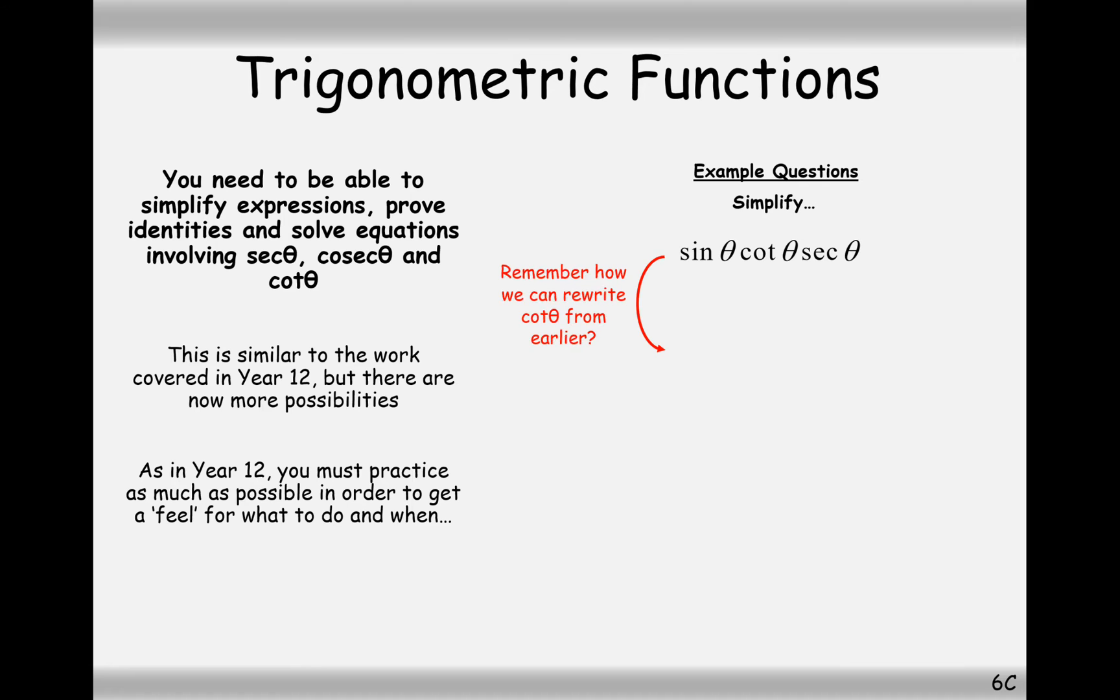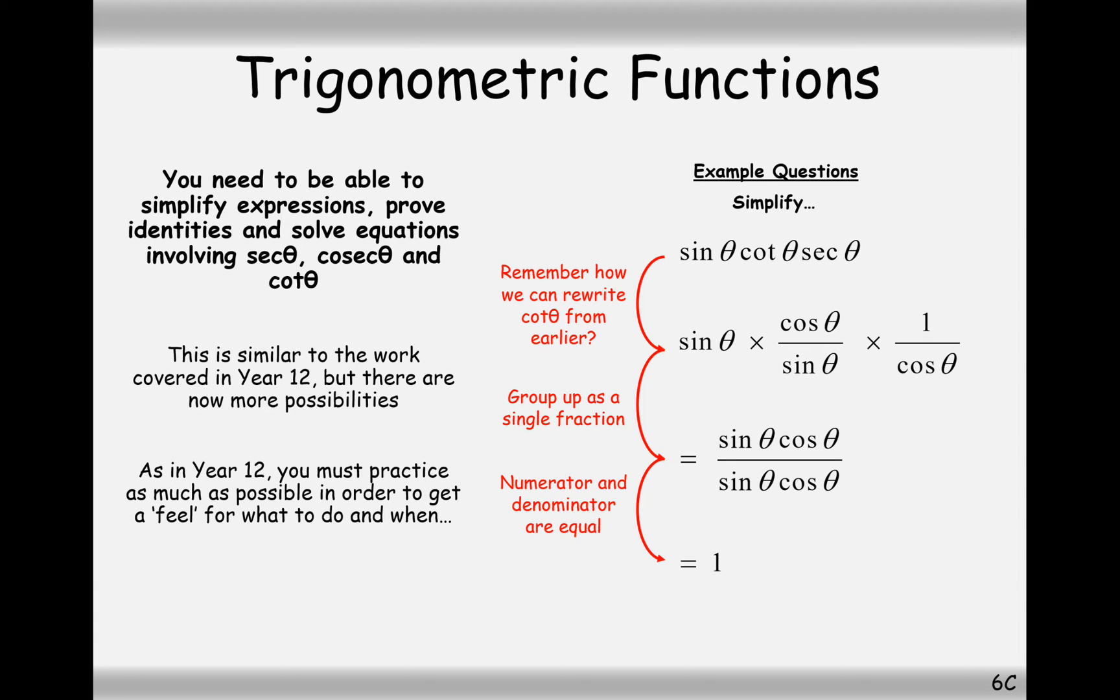So, rearranging this thing here, remember that we worked out a way to represent cot in terms of cos and sine, and sec here is obviously 1 over cos. Multiplying all of these terms together when they are written in sine and cos form, and we can see here that when we multiply these three terms together, all of this stuff factors down, so we've just got one left over.